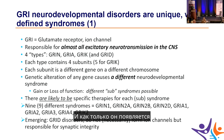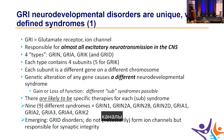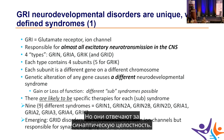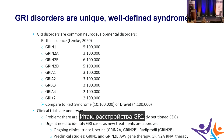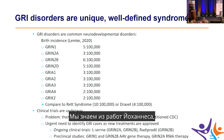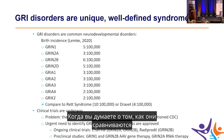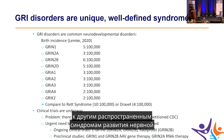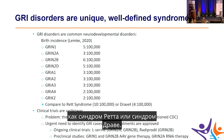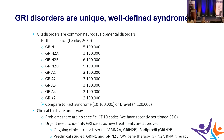Gain or loss of function variants are theorized to cause different sub-syndromes, suggesting there will likely be specific therapies for each. This results in at least nine different syndromes per disorder. Emerging are GRID disorders — channels that don't necessarily form ion channels but are responsible for synaptic integrity. GREE disorders are common neurodevelopmental disorders, comparable in birth incidence to Rett syndrome or Dravet syndrome.